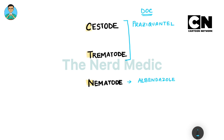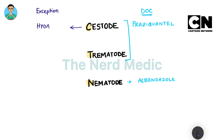However, the story is not that simple — we have a few exceptions to this rule. In cestodes, we have an exception: that is hydatid cyst. In case of hydatid, we use albendazole instead of praziquantel.